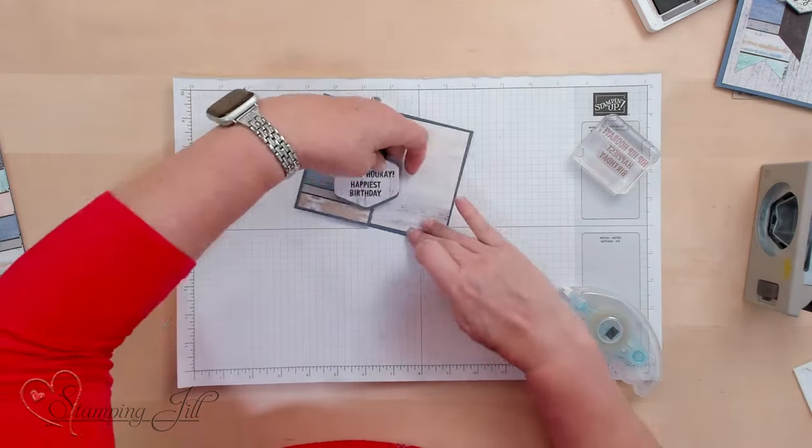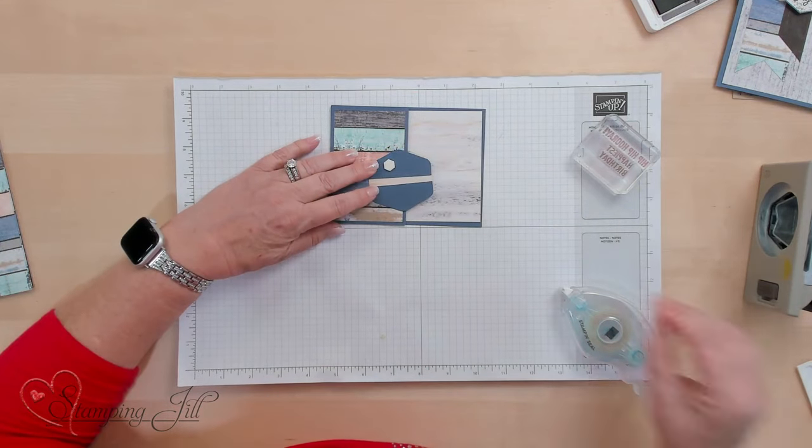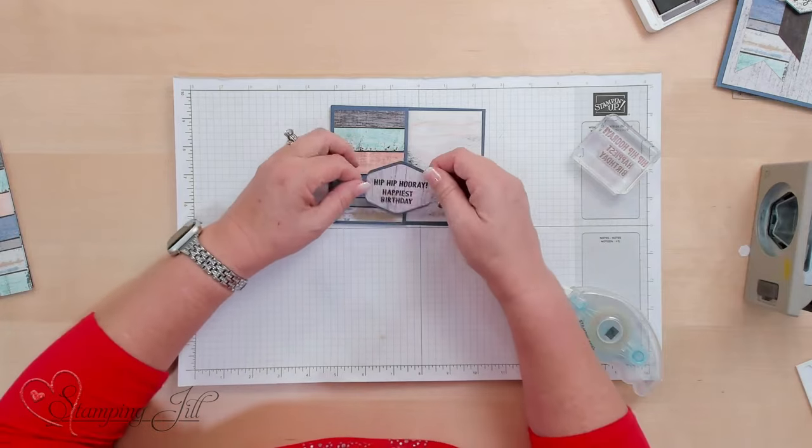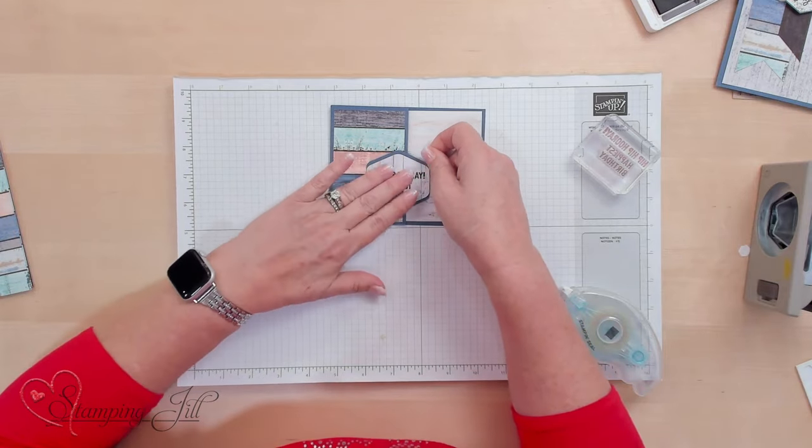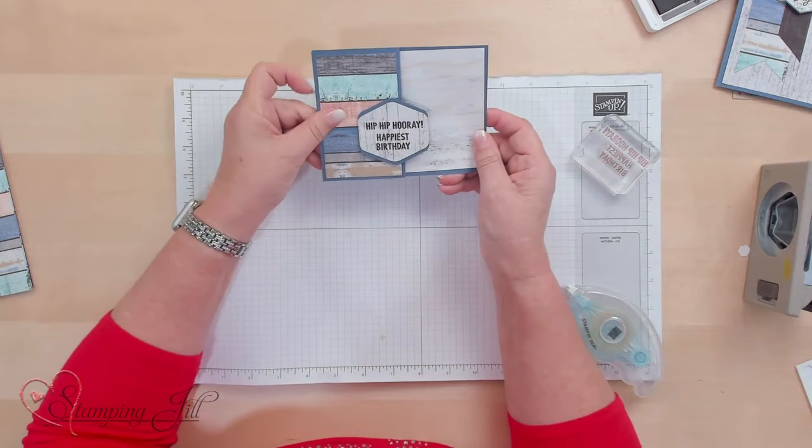And I just want to make sure what side I'm putting the adhesive on. It will be on the left hand side of the back piece. I would use some linen thread also to give it that texture. So this is just a layout here for a masculine card.